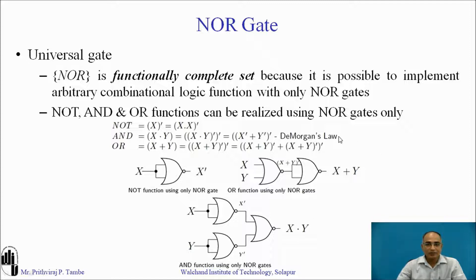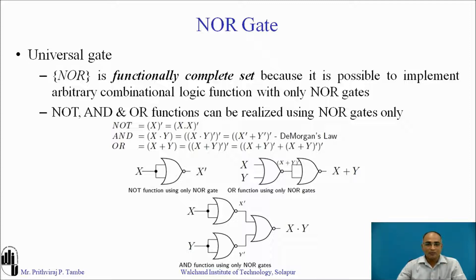So we have understood this using the involution and De Morgan's theorem steps. Third is the OR gate — it is very simple. We have x + y, and we just apply involution, so the expression becomes (x + y)̄̄. The output (x + y)̄ goes to both inputs of the second NOR gate, giving ((x + y)̄ + (x + y)̄)̄, which is nothing but x + y. This slide shows how you can implement basic logic functions using only NOR gates.